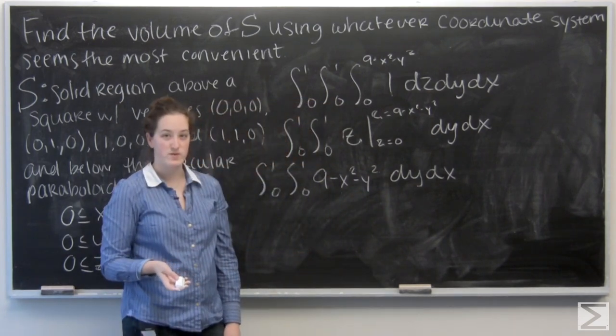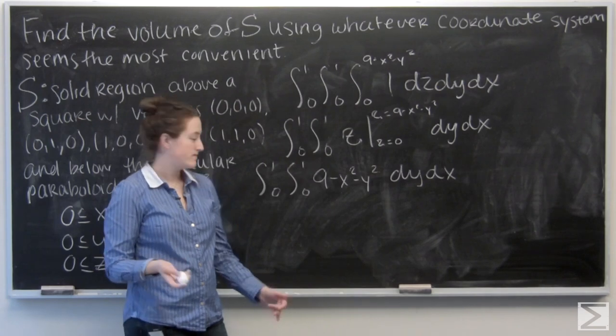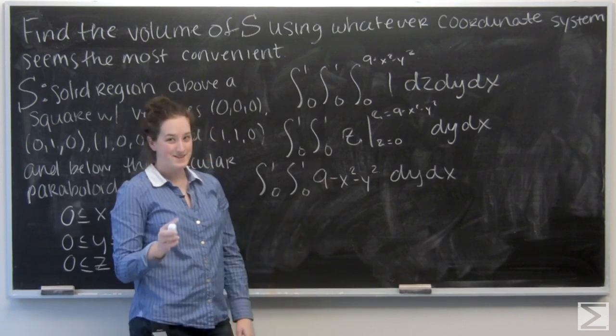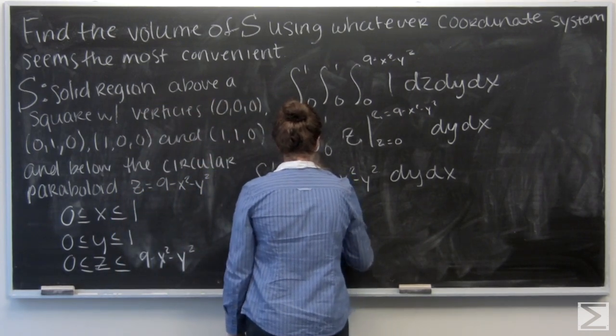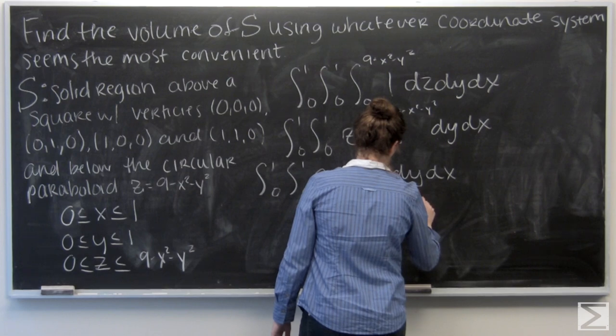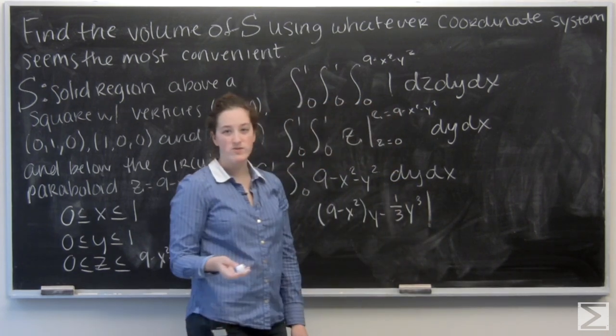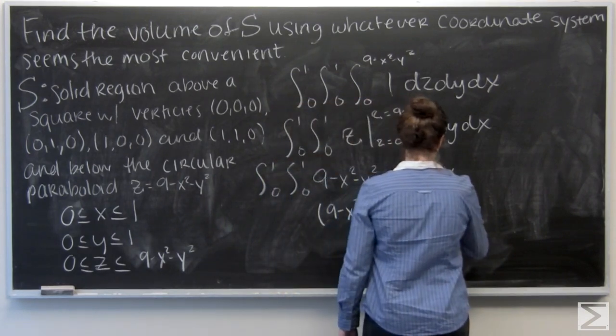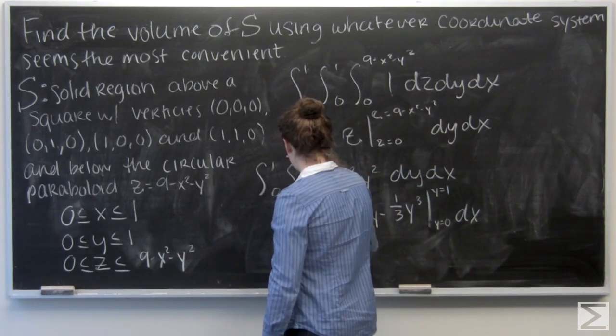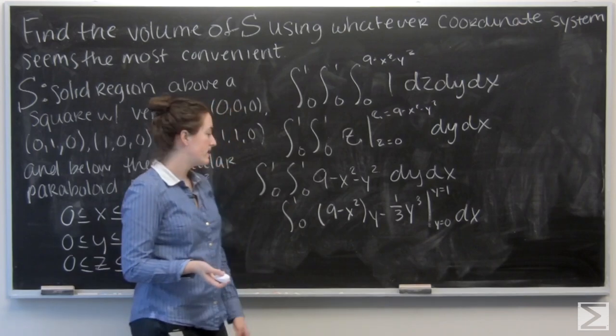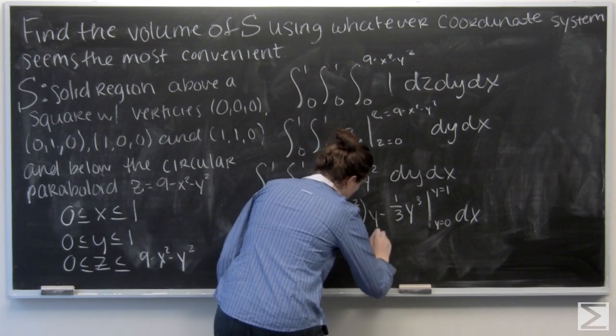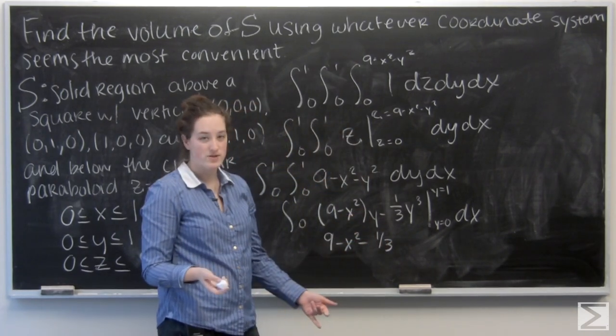Now I'm ready to integrate with respect to y. This y² is my only function of y in the integral. I'm going to have (9 - x²)y - (1/3)y³. I'll evaluate that from y = 0 to y = 1. When I plug in 1 for y, I get 9 - x² - 1/3. When I plug in y = 0, all my terms drop out.